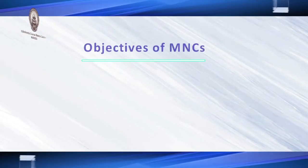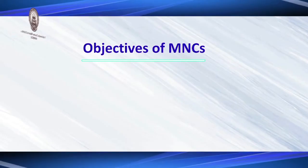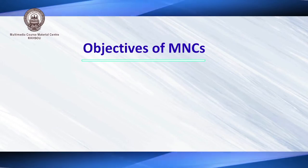Geocentric multinational corporations neither give preference to the home country nor the host country — they give importance to the world as a whole. So these three are the types of multinational corporations. Now let's discuss the objectives of multinational corporations — why does a company want to operate in different countries?